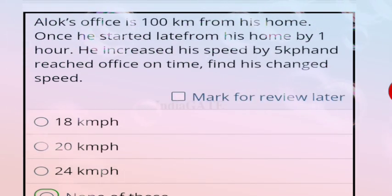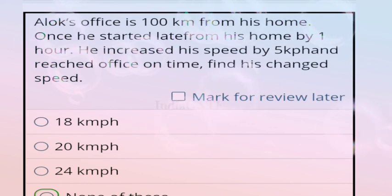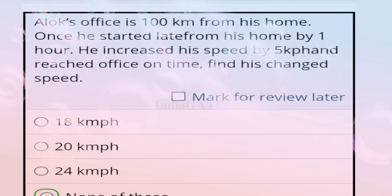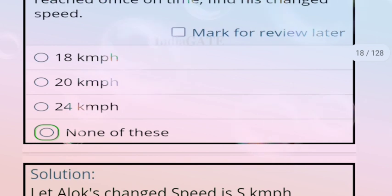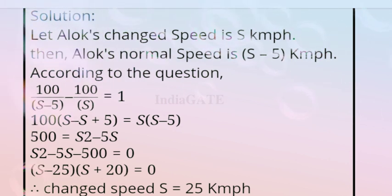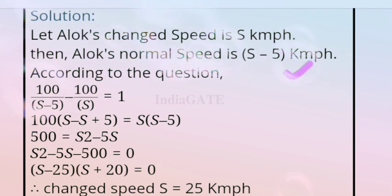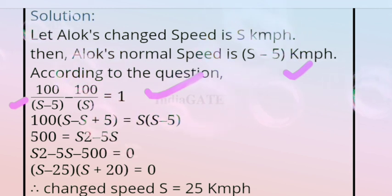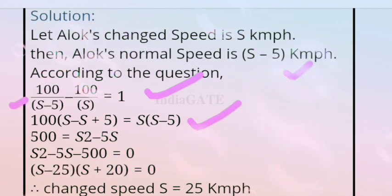Next question: Alok's office is 100 km from his home. Once he started late by 1 hour, he increased his speed by 5 km/h and reached on time. Find his usual speed. The correct answer is option D, none of these. Let the increased speed be s km/h; usual speed is s - 5. Equation: 100/(s-5) - 100/s = 1. Solving gives s = 25 km/h.